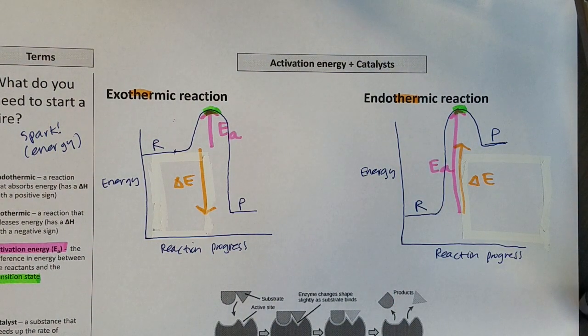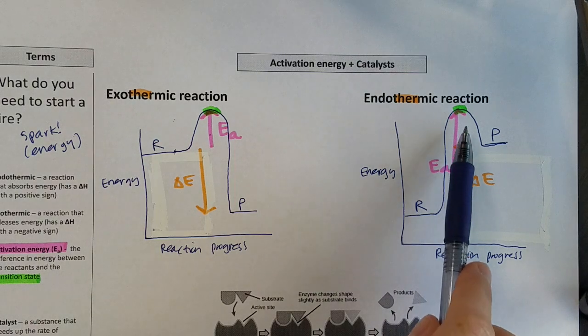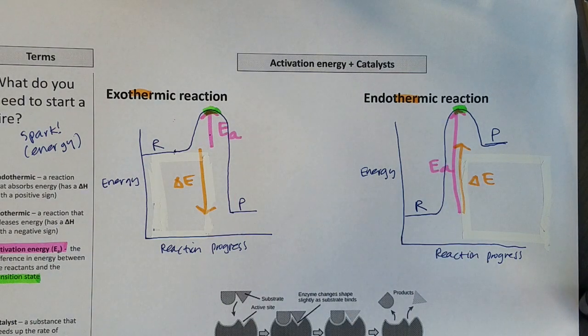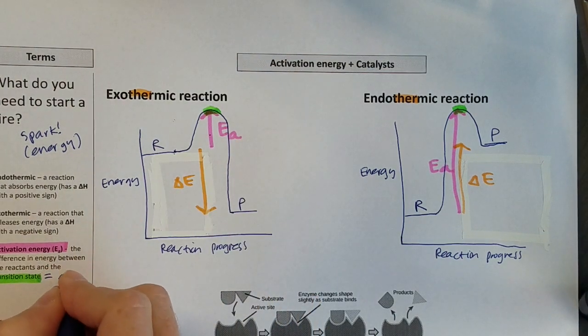As you look at these, does one look easier than the other? This, I would say, is easier because it takes less energy, and this is a larger amount of energy, so that would be a more difficult reaction to have happen. So again, it's how much energy does it take to get to that transition state?